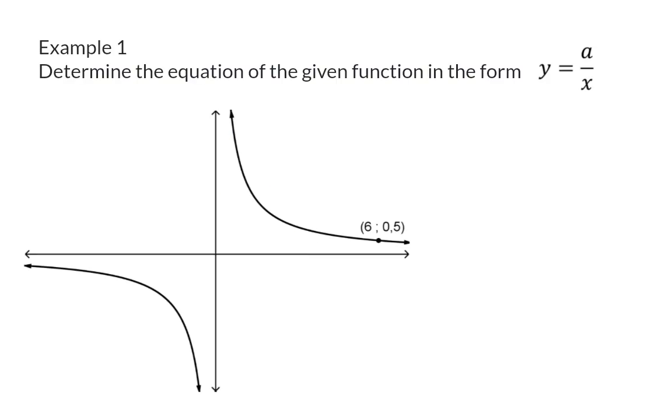Example 1. Determine the equation of the given function in the form y equals A over x. This form indicates that the Q value is 0, and the horizontal asymptote lies on the x-axis. So all we need to determine is the A value, and just like with all the other functions, we're going to have a look at what information is given on the sketch.